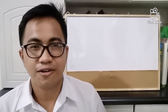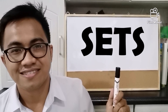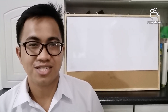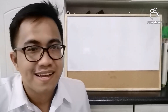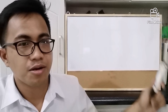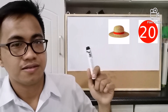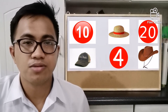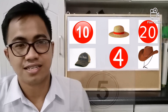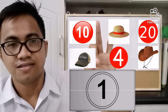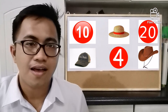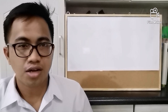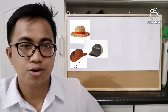Hello everyone, welcome back to my channel. For this time we will be talking about sets. Sit back, relax, and enjoy the video tutorial. Before we start, I have here some objects — please group the following objects for five seconds. How many groups are there? Very good! There are two groups: the group of hats and a group of numbers.